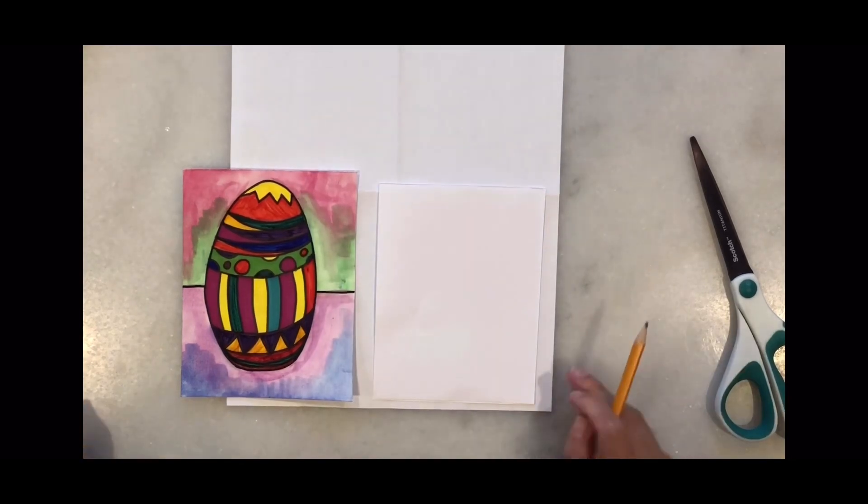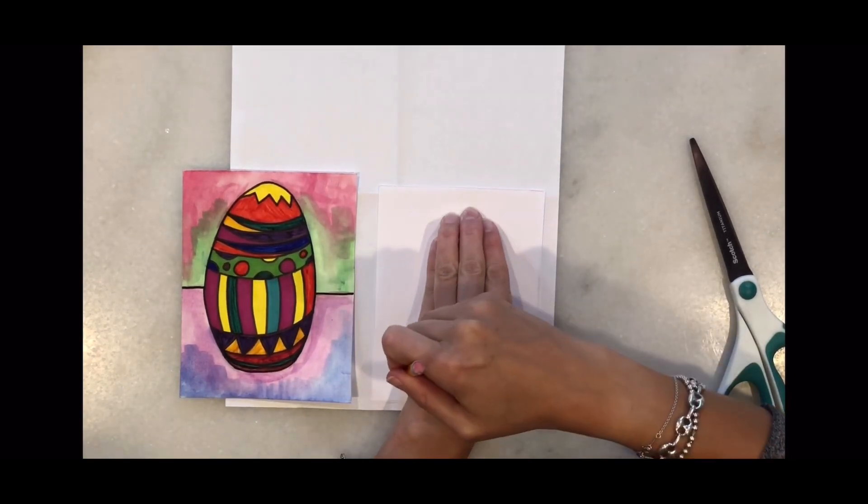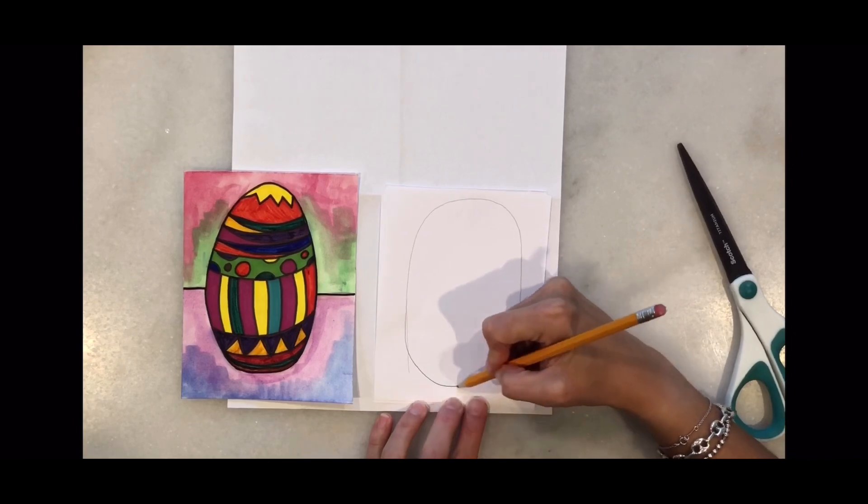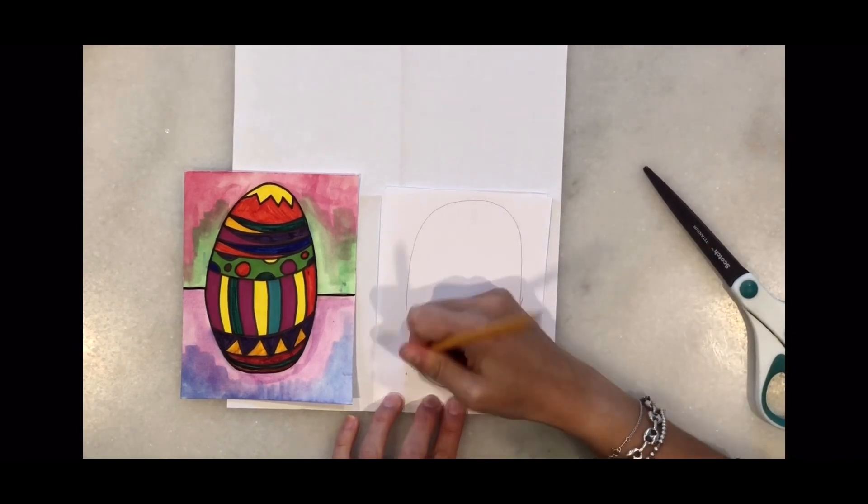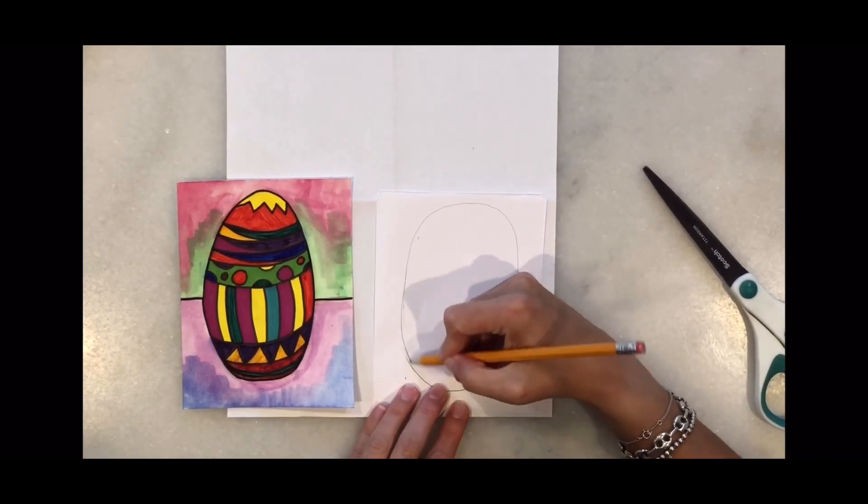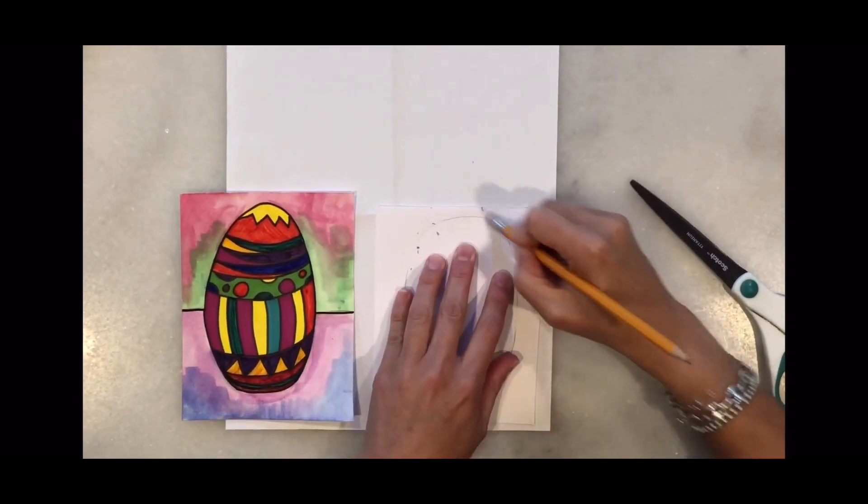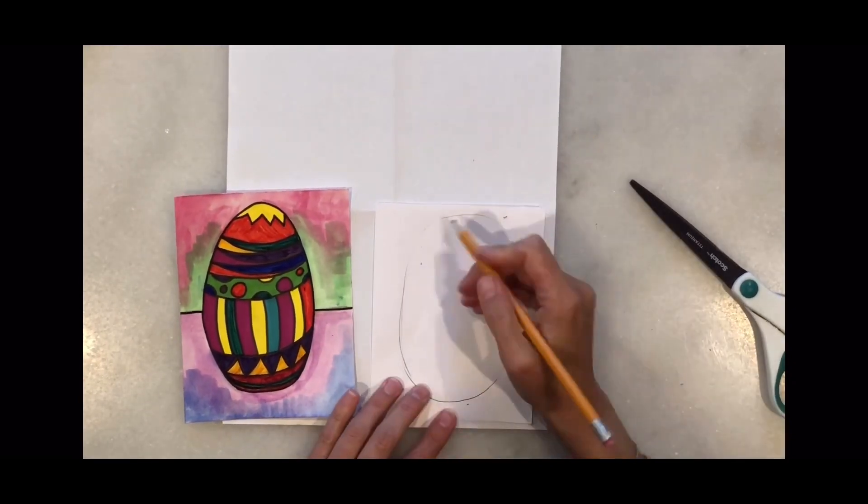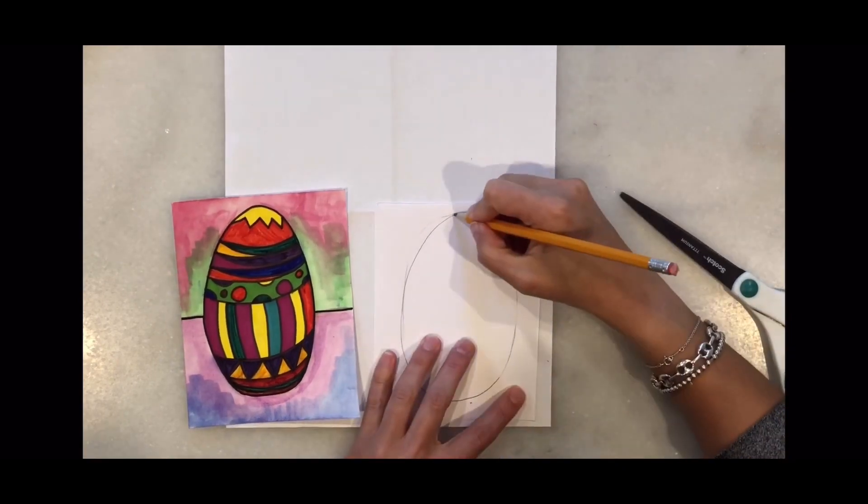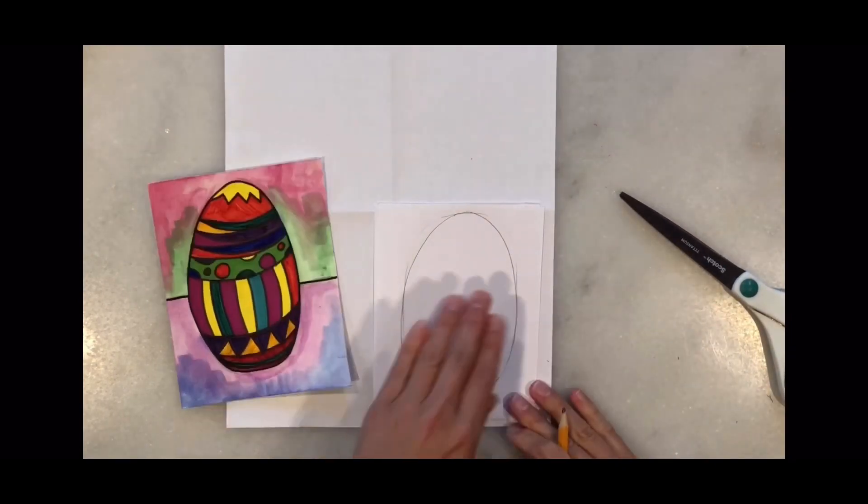We're going to start with the egg shape. I use my hand to help me with the shape of the egg. Sometimes you need to erase and fix it. That's okay, don't worry about it. Erase and fix it as many times as you need until you get the shape of the egg that you like.